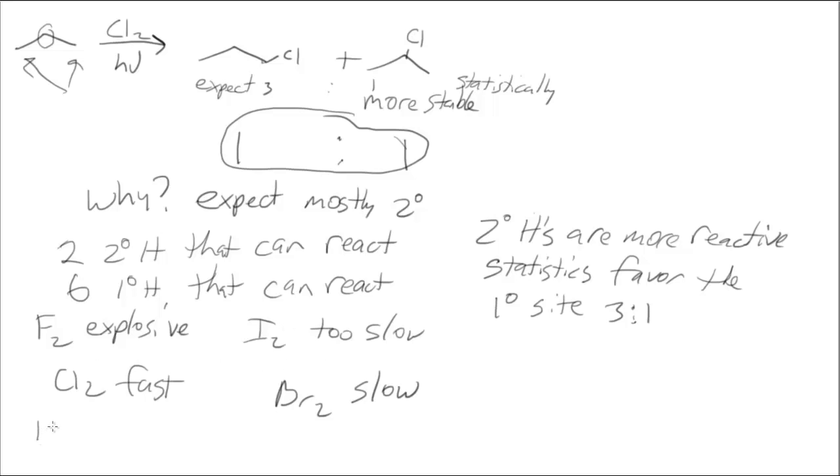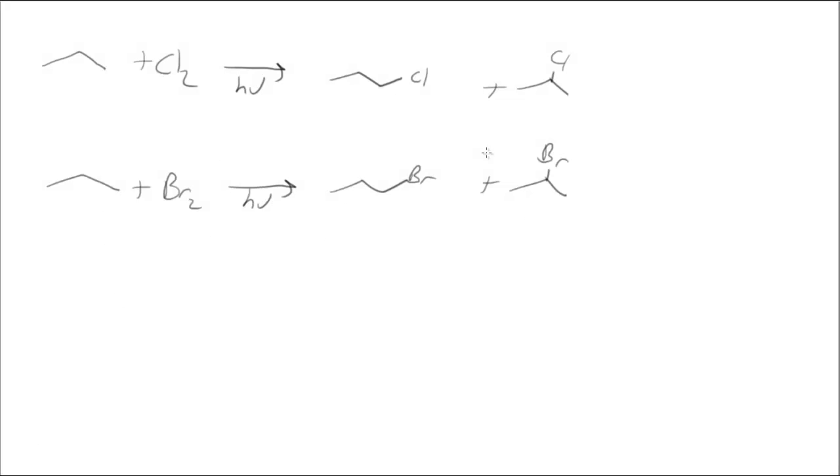Because the chlorine is fast it also makes it less selective. It's going to react as quickly as it can wherever it can. The bromine because it's slower is also then more selective.